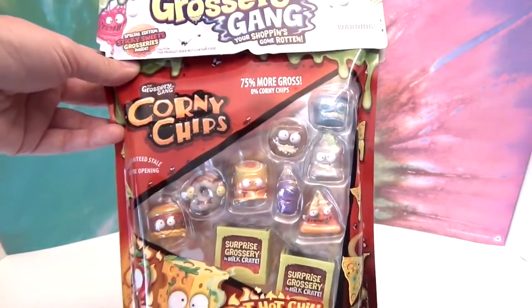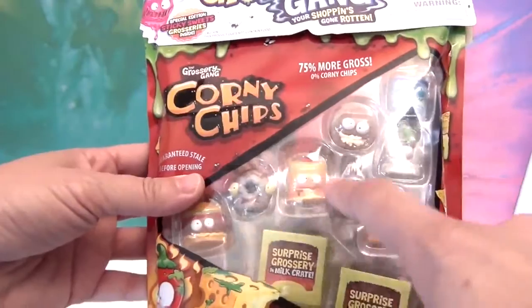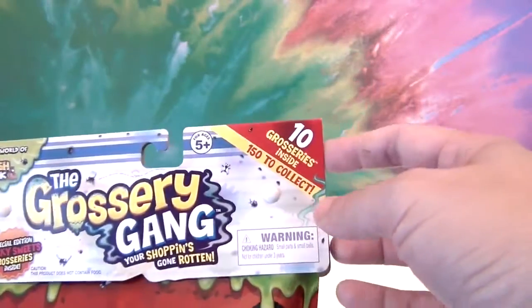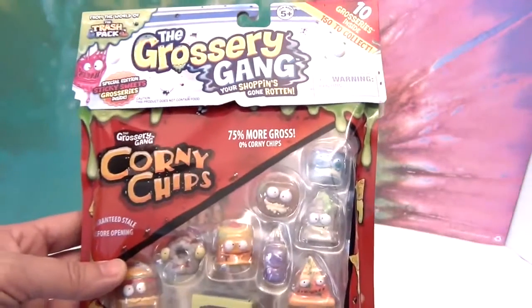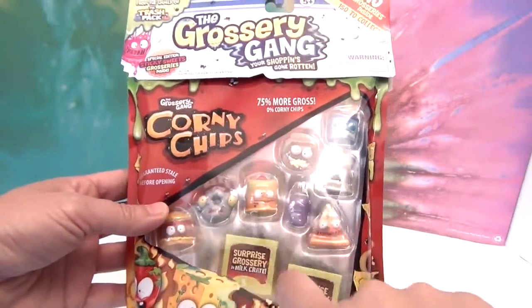These are, I believe, a 10-pack. Let's see if it tells... yes, 10-pack of groceries inside. 150 to collect. So there are eight visible and two mystery creep groceries.